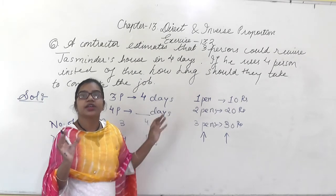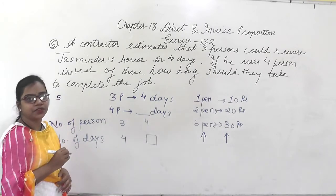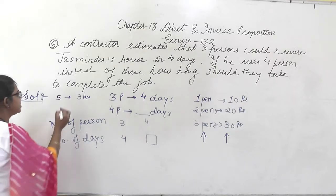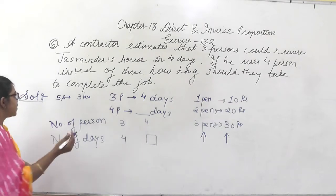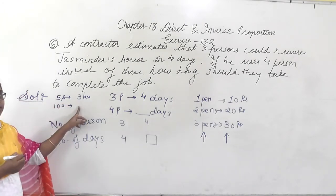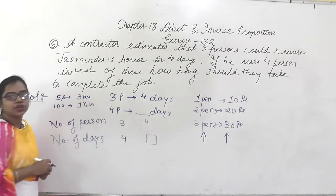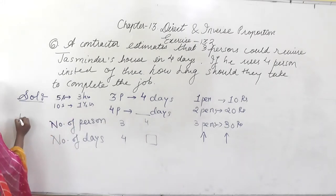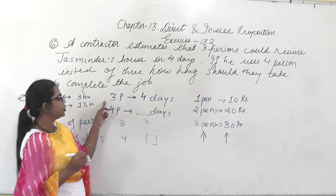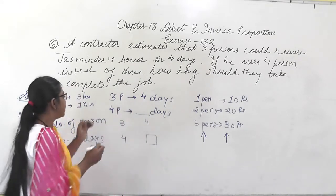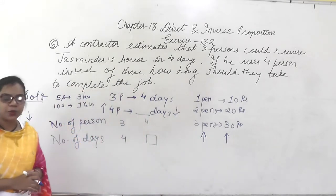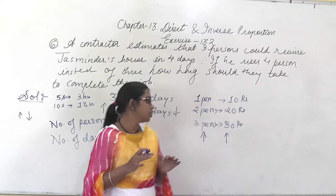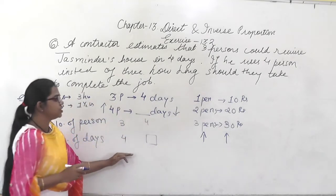For example: suppose 5 students are assigned a work and they complete it in 3 hours. If I increase those 5 students to 10 students, they will maybe complete it in 1 and a half hours. So as the number of persons increases, the time decreases. Here also, 3 persons take 4 days; if you increase the number of persons the number of days will decrease — this is inverse proportion, where one increases and the other decreases.